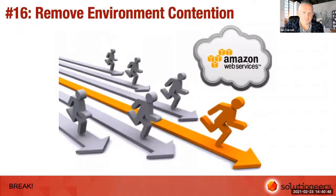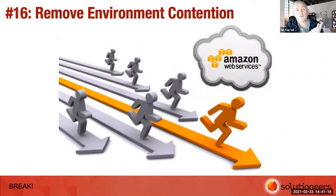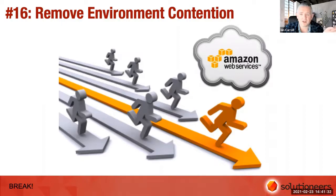Number sixteen: shared resources. A common example is a shared test environment — like a deli counter where you take a ticket and wait until your number's called before you can use the environment. This is about using cloud and DevOps — modern resources available to us — to reduce that contention and remove it completely. It's great for breaking dependencies, but it can be longer-term, and some platforms still can't go to the cloud.